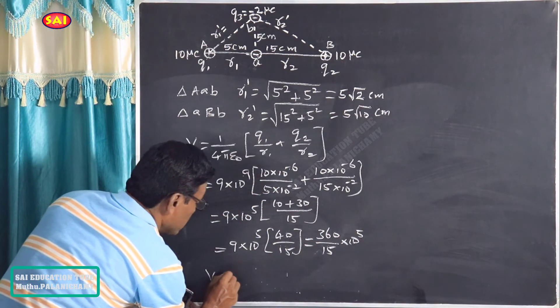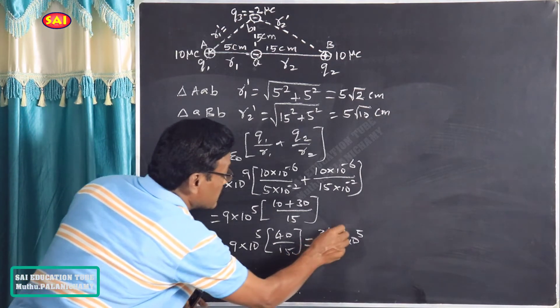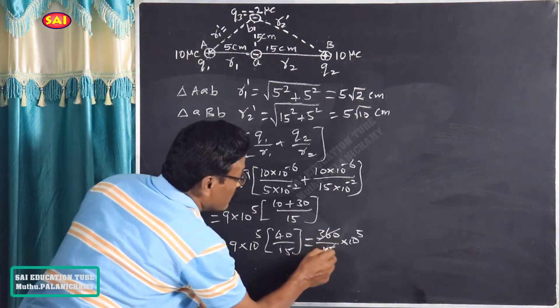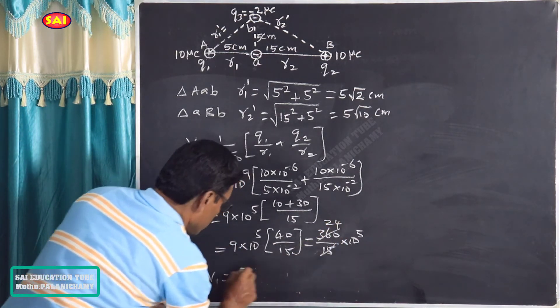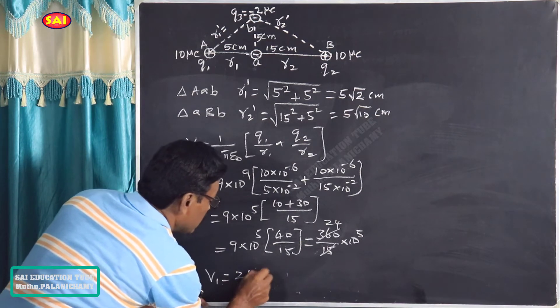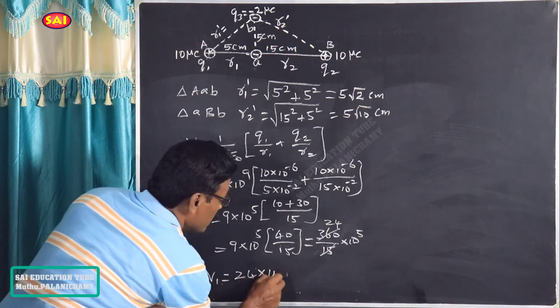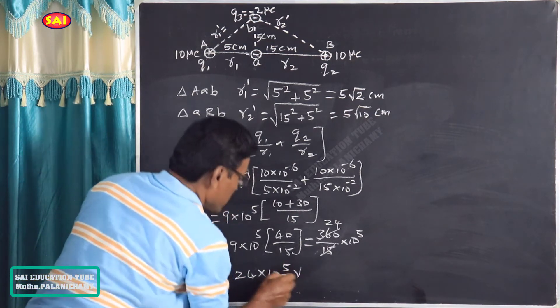Therefore, V1 is equal to 24 × 10⁵ volts.